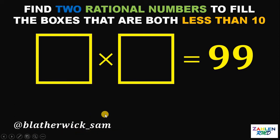Now, let's answer this question. First thing to do is to think of two numbers that when we multiply, we get 99. And the basic numbers must be 9 times 11. But unfortunately, 11 is greater than 10. We want a number or rational number that is less than 10.